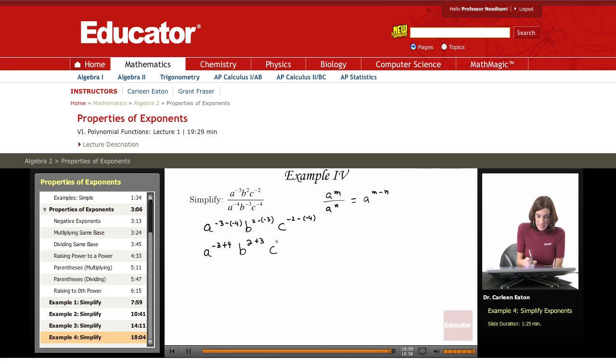So this gives me negative 3 plus 4 is just 1, so I leave that as a. b^(2 plus 3) is b^5. And then c^(negative 2 plus 4) is c^2.